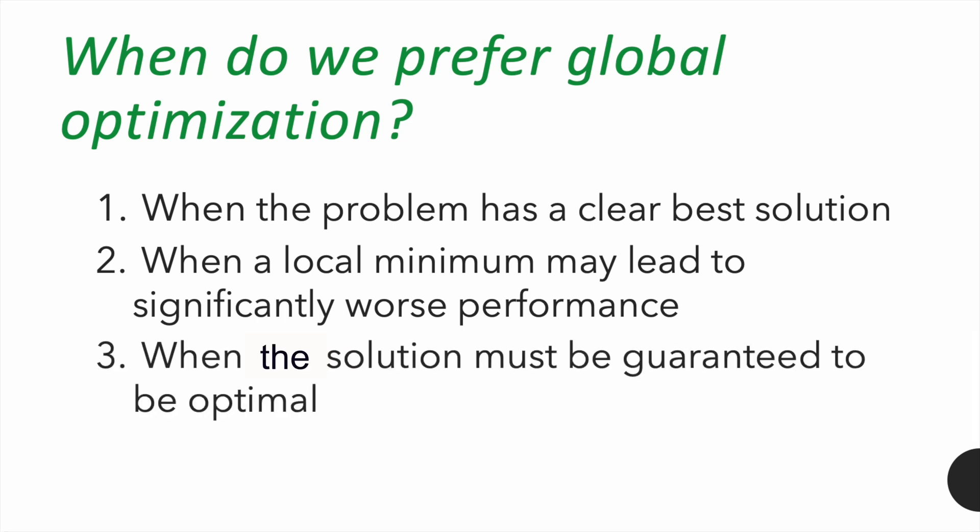We also rely on global optimization when the solution must be guaranteed to be optimal, especially in critical applications like finance, control systems, or safety critical systems. Finally, if the search space is small or well-bounded, global methods like grid search or branch and bound are practical and effective. So, while deep learning usually accepts a good local solution, global optimization is still essential in many structured and high-stakes problems.